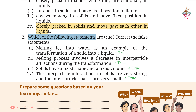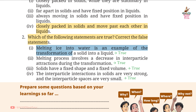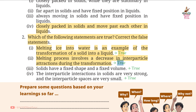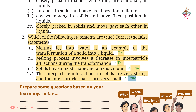Question 2: Which of the following statements are true? Correct the false ones. First: Melting ice into water is an example of the transformation of a solid into a liquid — True. Second: Melting process involves a decrease in inter-particle attractions during the transformation — True. Third: Solids have a fixed shape and a fixed volume — True. Fourth: The inter-particle interactions in solids are very strong and the inter-particle spaces are very small — True.